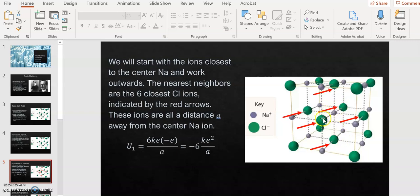The charges on these nearest neighbor ions - one has a charge plus E and one has a charge minus E. So the total potential energy for all those six nearest neighbors would be six times K times minus E times E over A. When you finish this calculation, you end up with minus six K E squared over A for all the nearest neighbor ions.